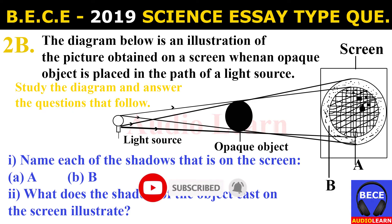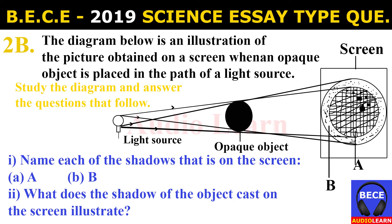Question 2b(ii): What does the shadow of the object cast on the screen illustrate? It indicates that light travels in straight lines — rectilinear propagation of light.